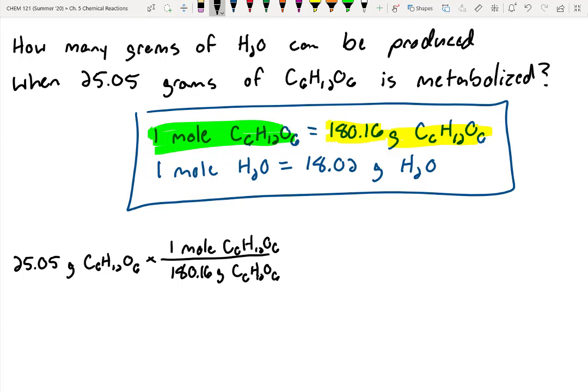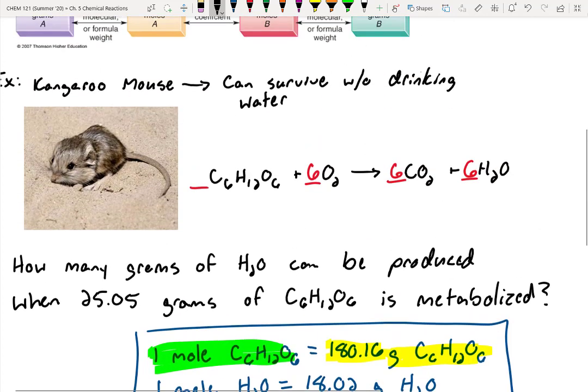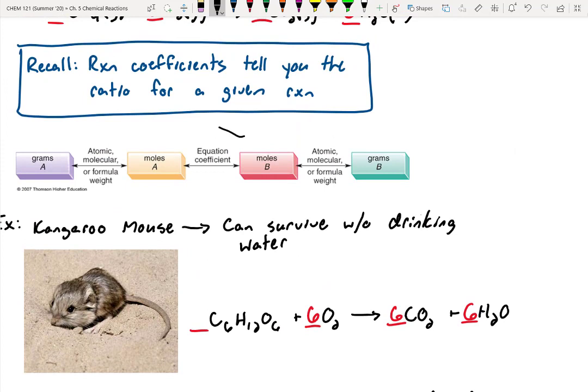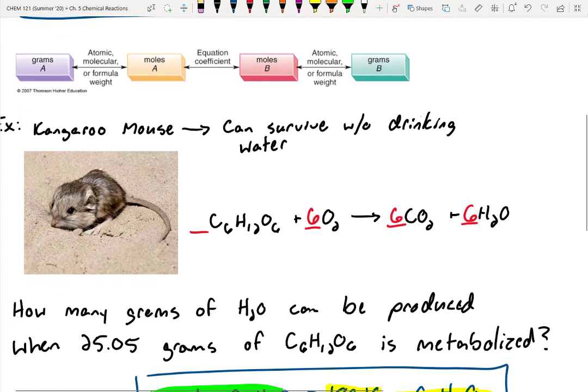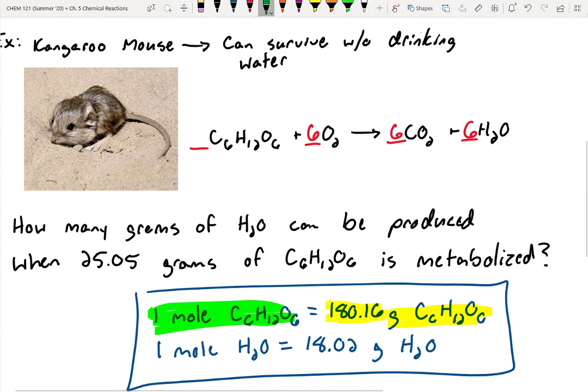But we don't want moles of glucose, we want to figure out how many grams of water. So we need to do a conversion to water. If we look back up at this flowchart, we'd say this is where the equation coefficient comes in, meaning the ratio. If I go ahead and look at this, I'd say for every one mole that we put in, we would get six moles out. So one mole in, six moles out. Let's use that as our ratio.